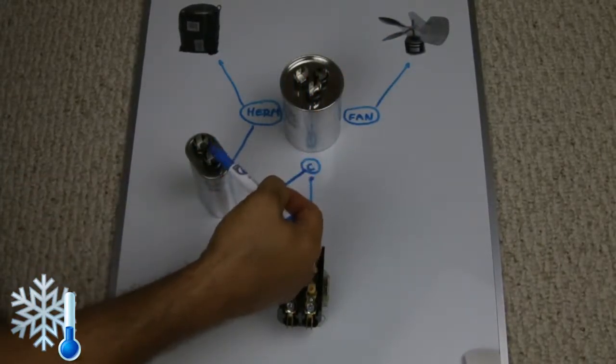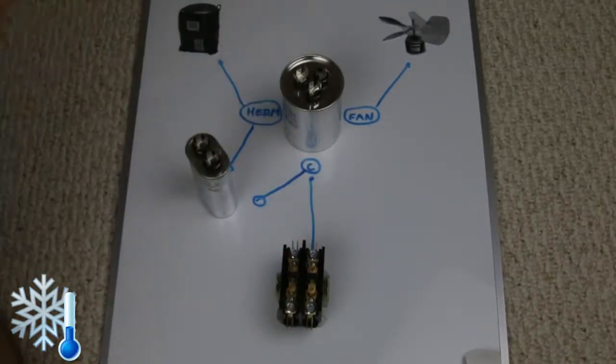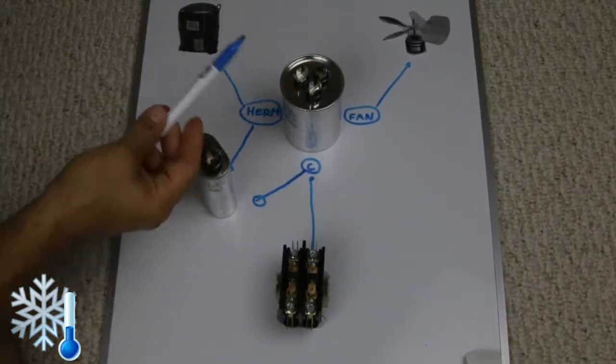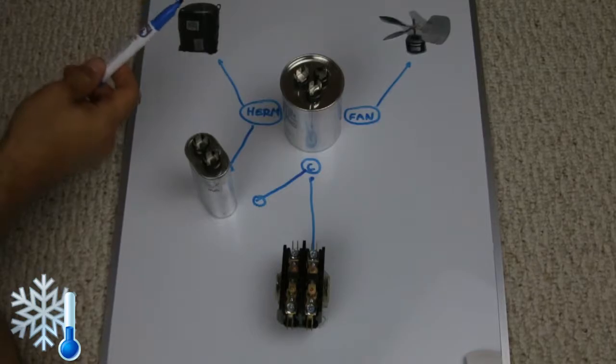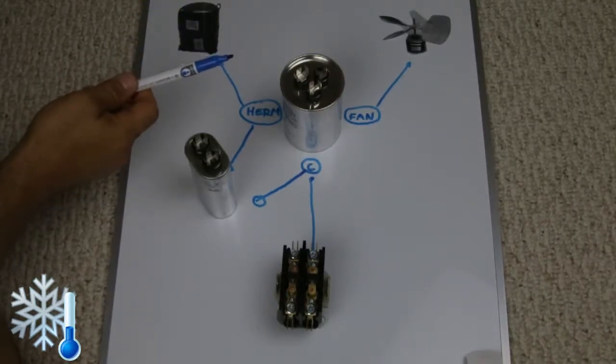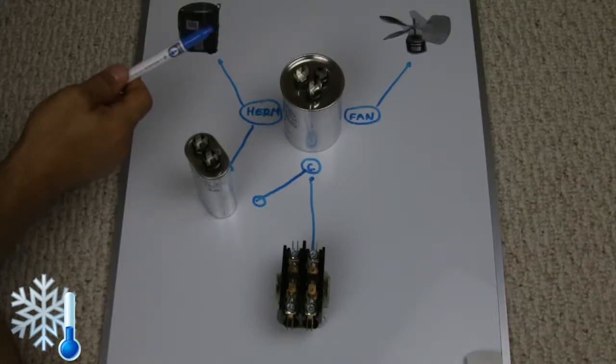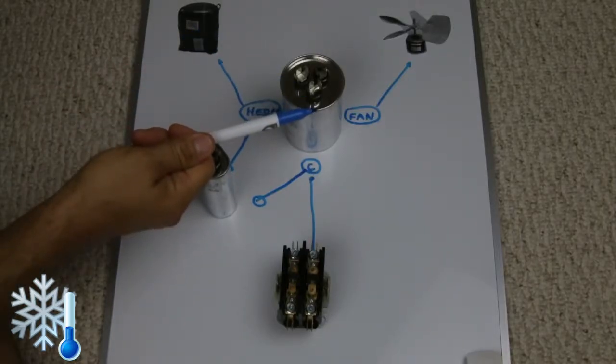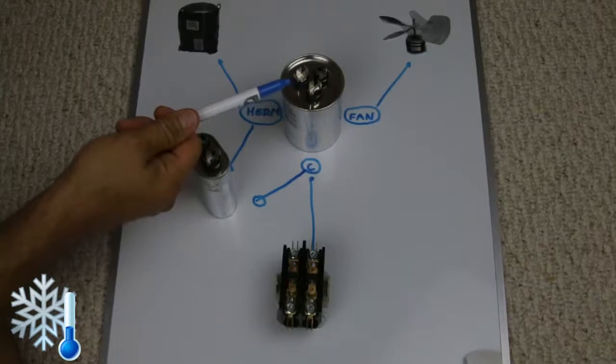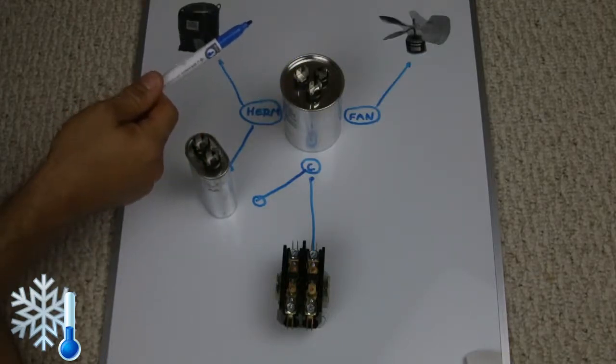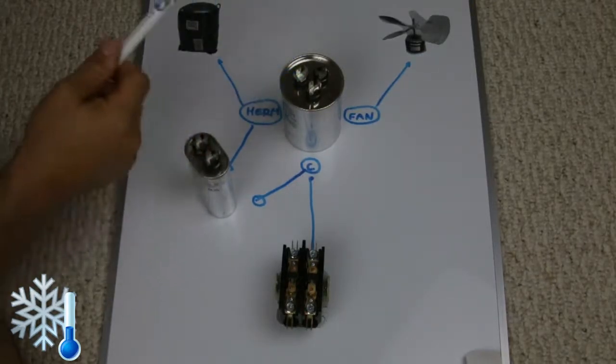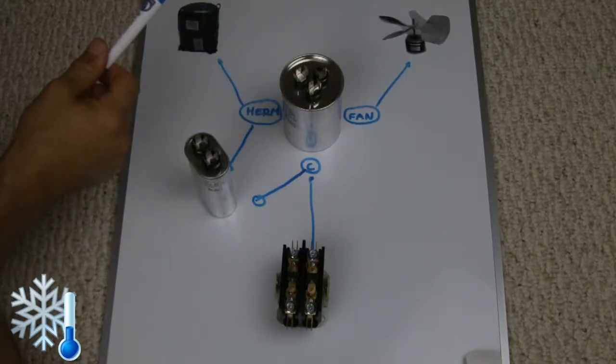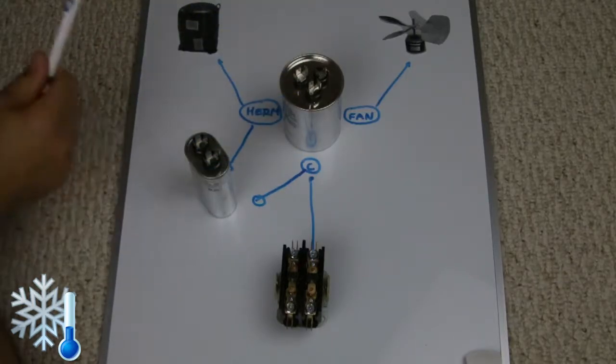That's actually what most technicians do if you need a capacitor that's not easy to find. For example, anything with 7.5 is a little bit more difficult to find. If you have a 45 plus 10 or 60 plus 10 or 80 plus 10, it's almost impossible to find and you can make one like that.